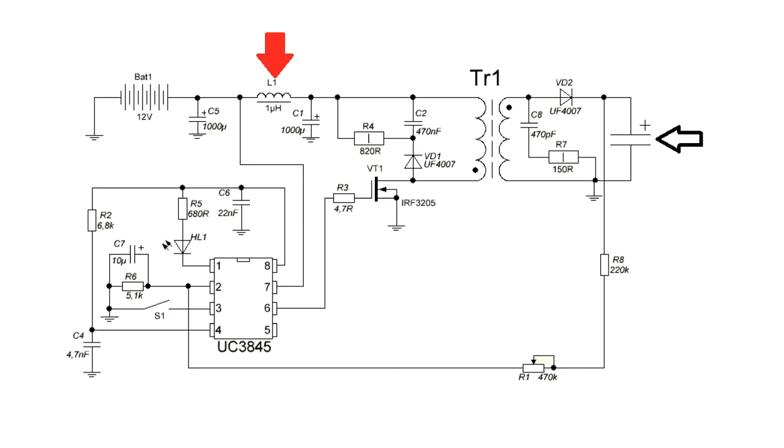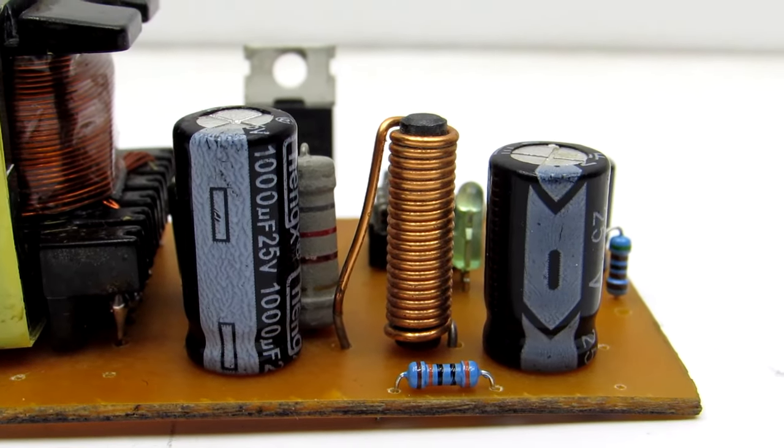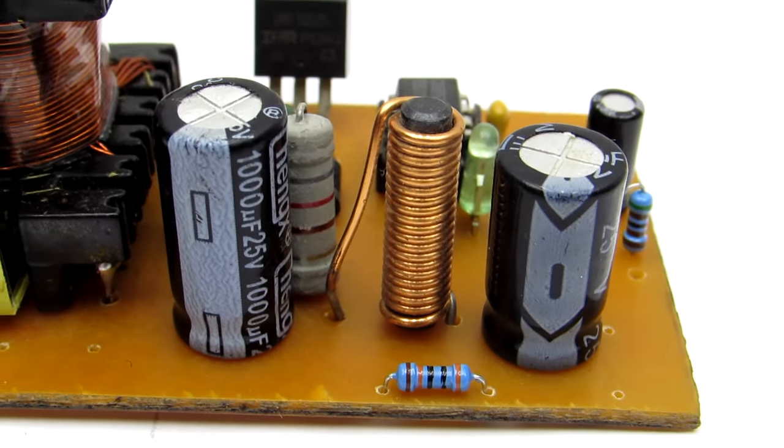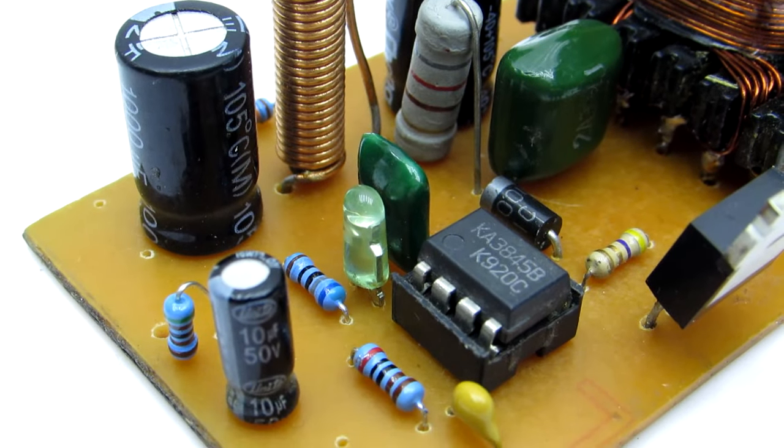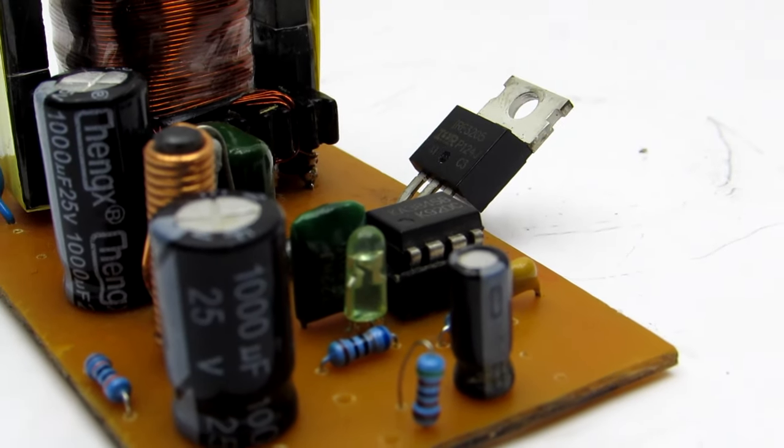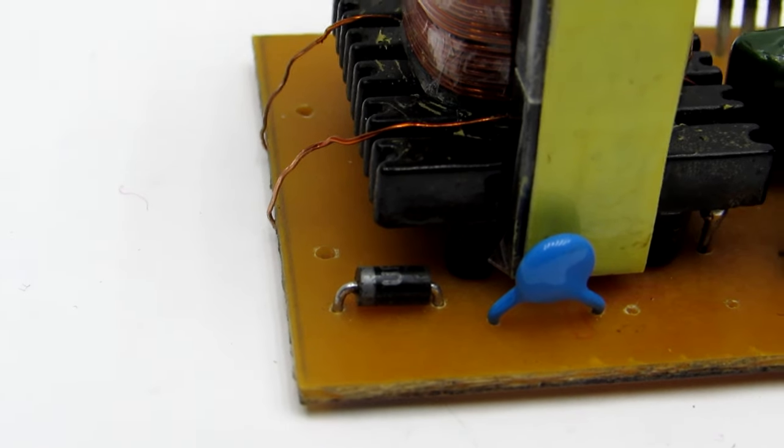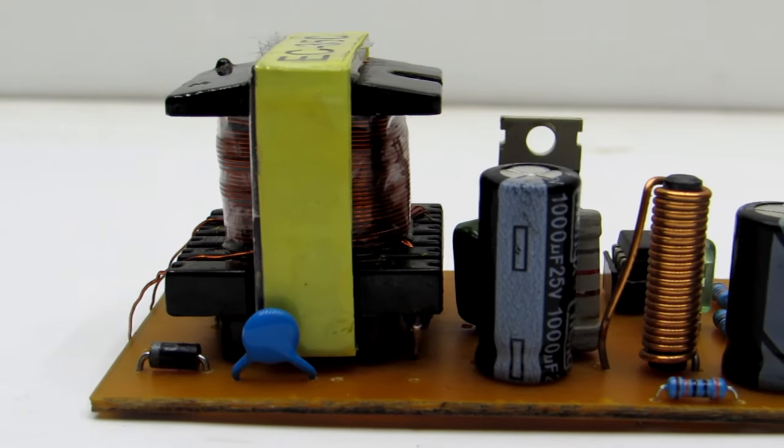Input choke can be omitted, but if you will put it, it is possible to wind with wire from 1 to 1.5mm. No special criteria. All electrolytic capacitors have a voltage of 25 to 35 volt. Can be more, but it makes no sense. The capacitor in the output circuit is the ceramic type and 1000 volts.